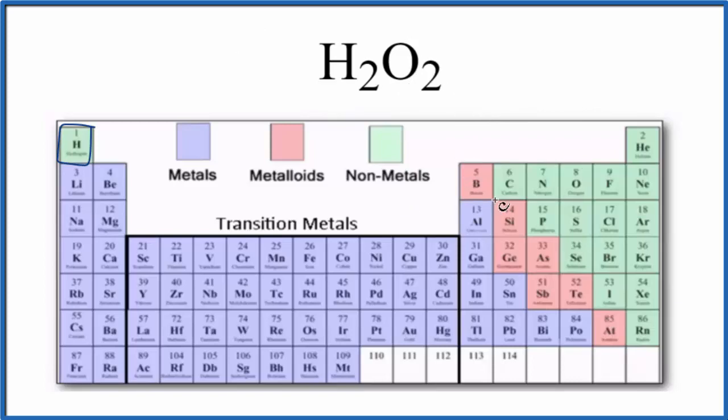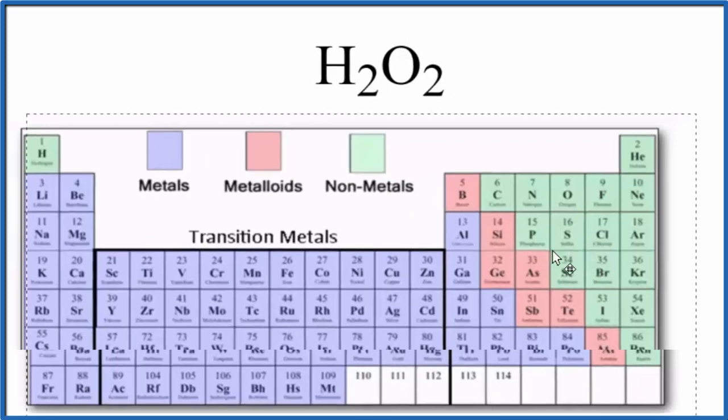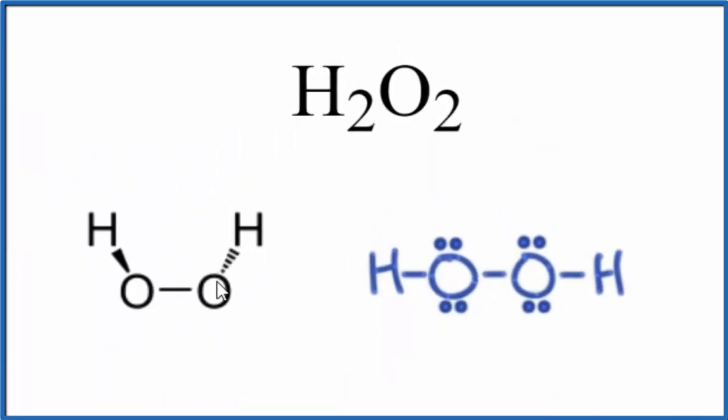Let's take a look at the structure for H2O2 for a moment. So if we drew the structure, this is one way we could draw it, and here's a Lewis structure for it. And these bonds, these lines between the atoms, these represent covalent bonds.